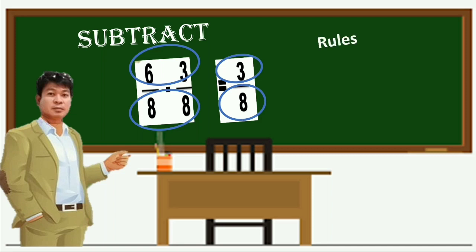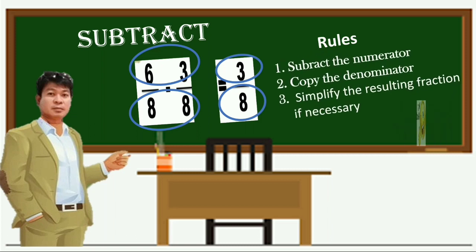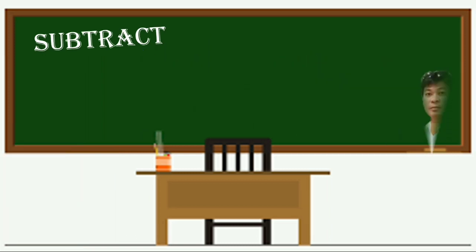So what are the rules? Number 1, subtract the numerator. Number 2, copy the denominator. And number 3, simplify the resulting fraction if necessary.